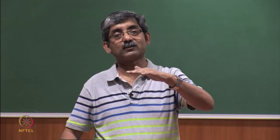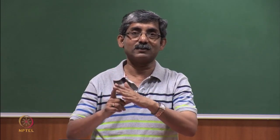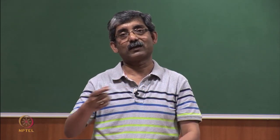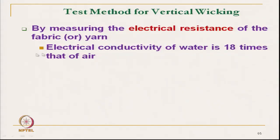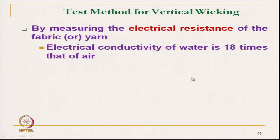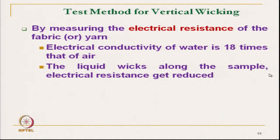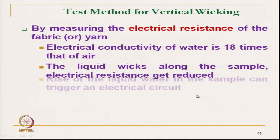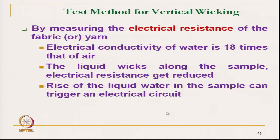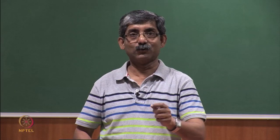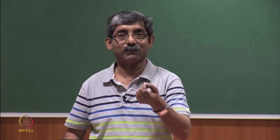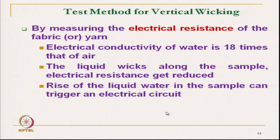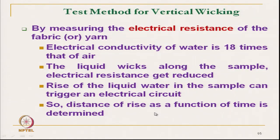Dry fabric has higher resistance than wet fabric, and liquid has very low resistivity. Using this principle, electrical resistance measurement is used to measure wicking characteristics. When the fabric has no water, resistance is high; when it is filled with water, resistance becomes very low. The electrical conductivity of water is 18 times that of air. As the liquid wicks along the sample, electrical resistance is reduced. The rise of liquid water in the sample can trigger an electrical circuit, indicated by a glowing LED lamp showing the rise at that particular height. Distance of rise as a function of time is determined.